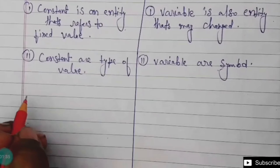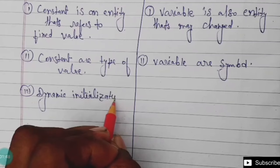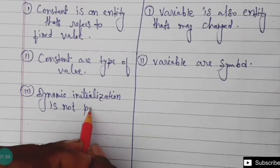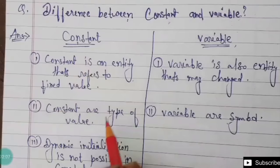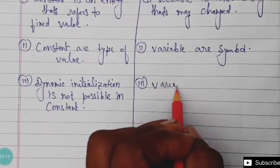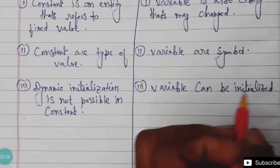Third point: in constants, dynamic initialization is not possible because the value is fixed, so we cannot initialize the value dynamically. In variables, dynamic initialization is possible because the variable can be changed.